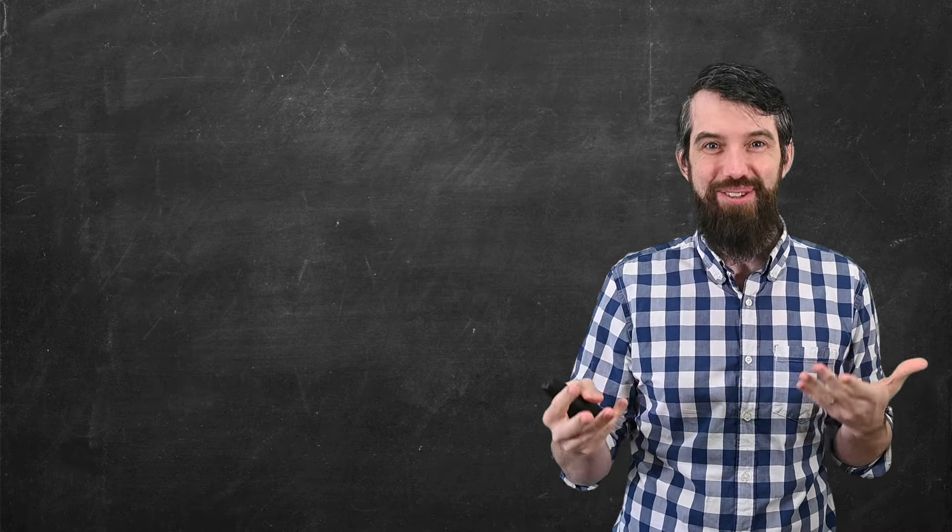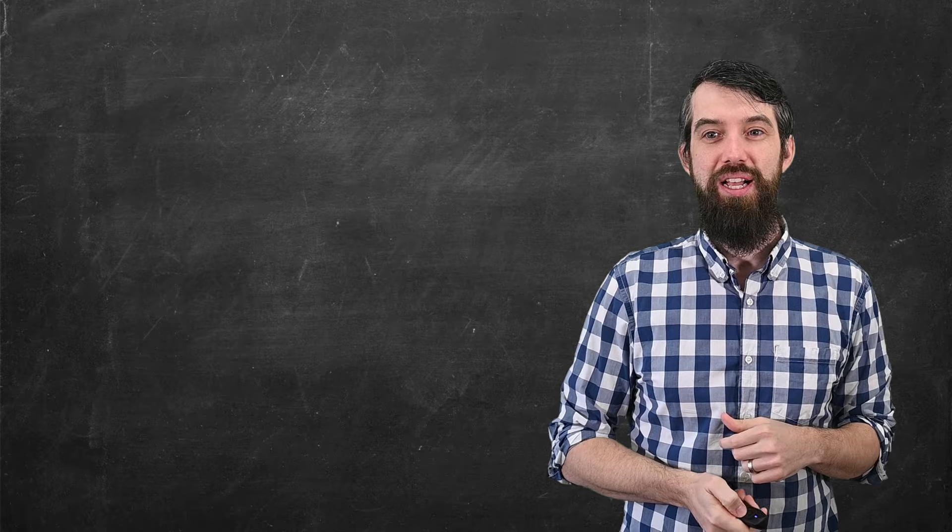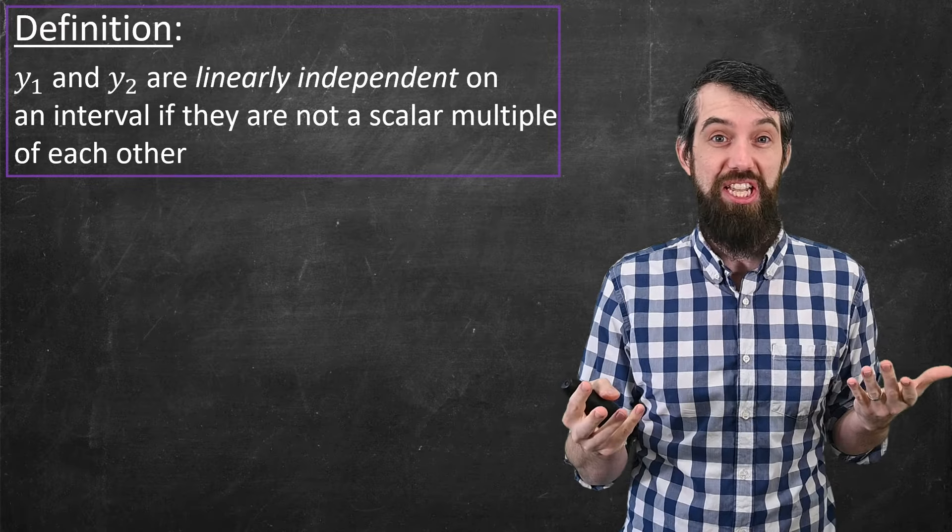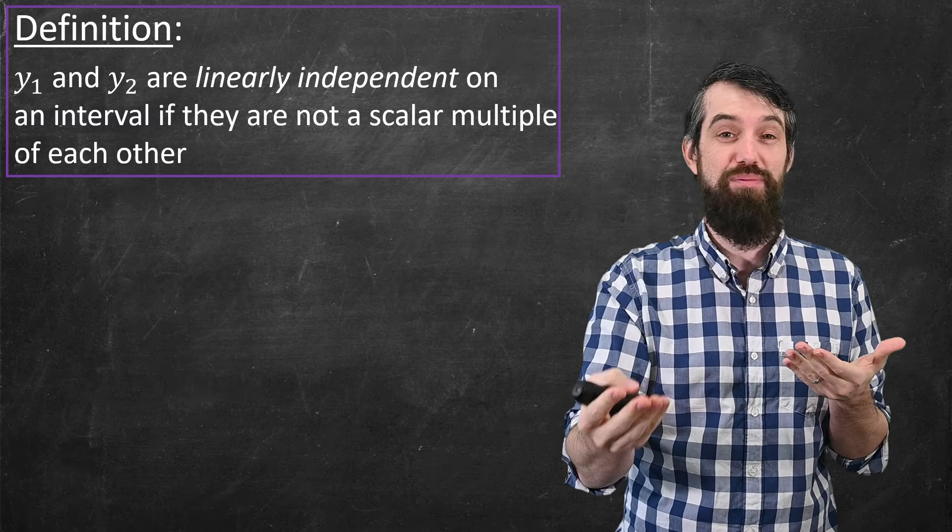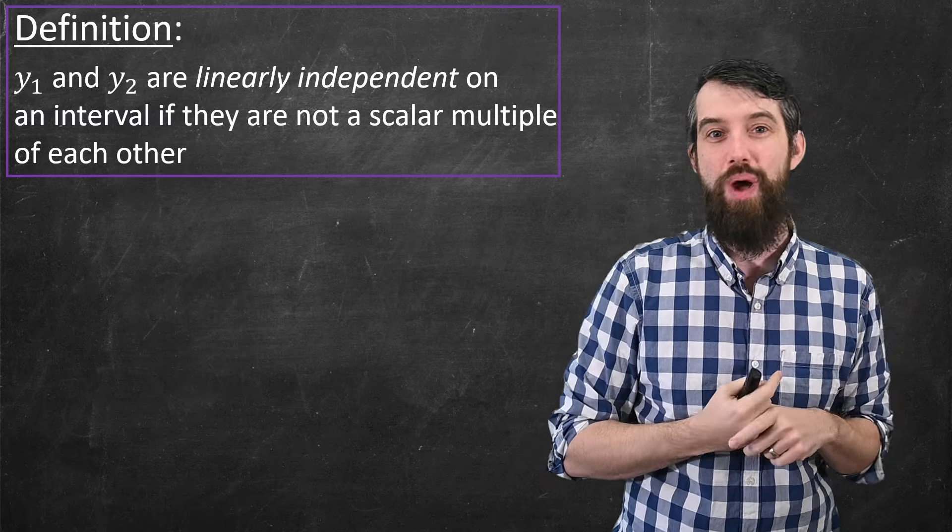In two dimensions, with just two different functions, the notion of linear independence is pretty simple. It just says one is not a scalar multiple of the other. It's not the case that y₁ is like twice y₂.